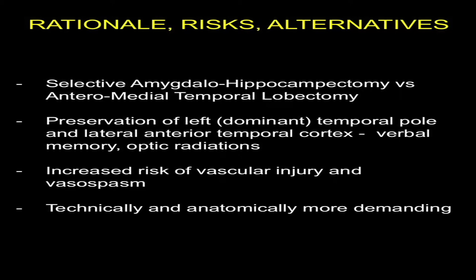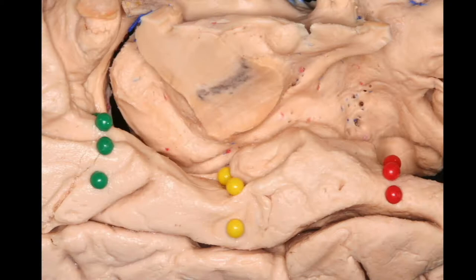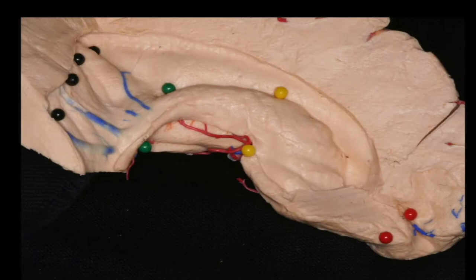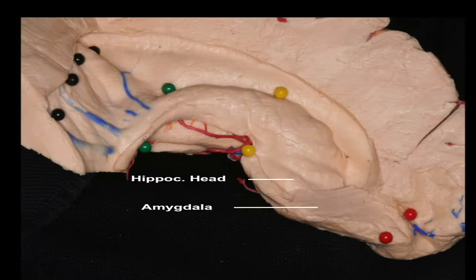The benefit of the selective approach is the preservation of left temporal lobe cortex at the expense of perhaps increased risk of vascular injury and vasospasm. The medial temporal lobe can be classified in anterior, medial, and posterior portions. Here we can see the intraventricular structures where the amygdala and the hippocampal head are located.